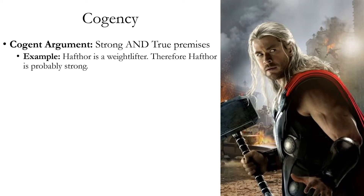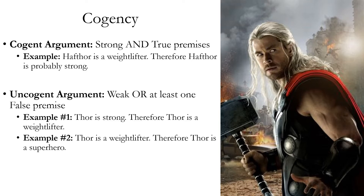A cogent argument is one that's both strong and has true premises. For example: Hoftor is a weightlifter, therefore Hoftor is probably strong.